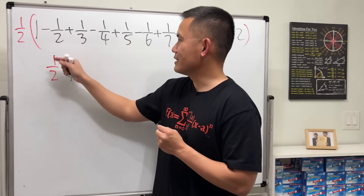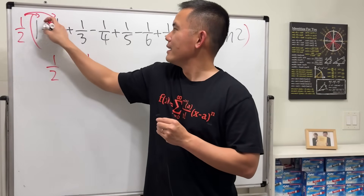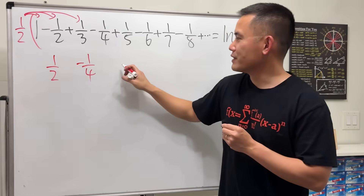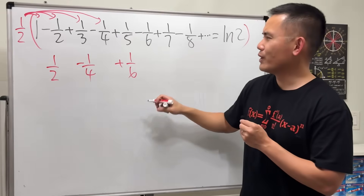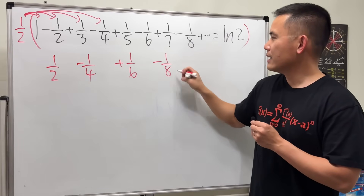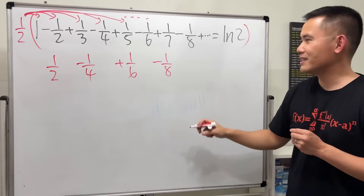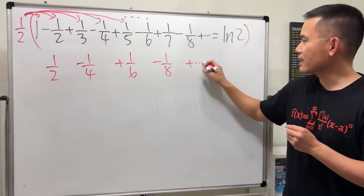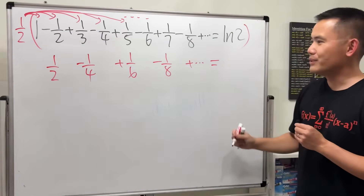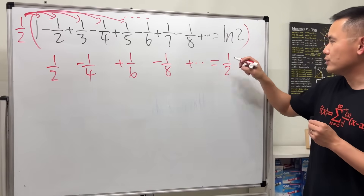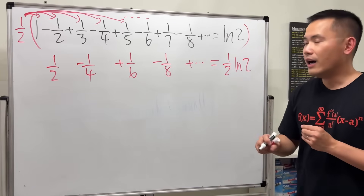Distributing the 1/2 gives us: 1/2, then a gap, then negative 1/4, then a gap, then positive 1/6, then negative 1/8, and so on. The right-hand side becomes (1/2)ln(2).